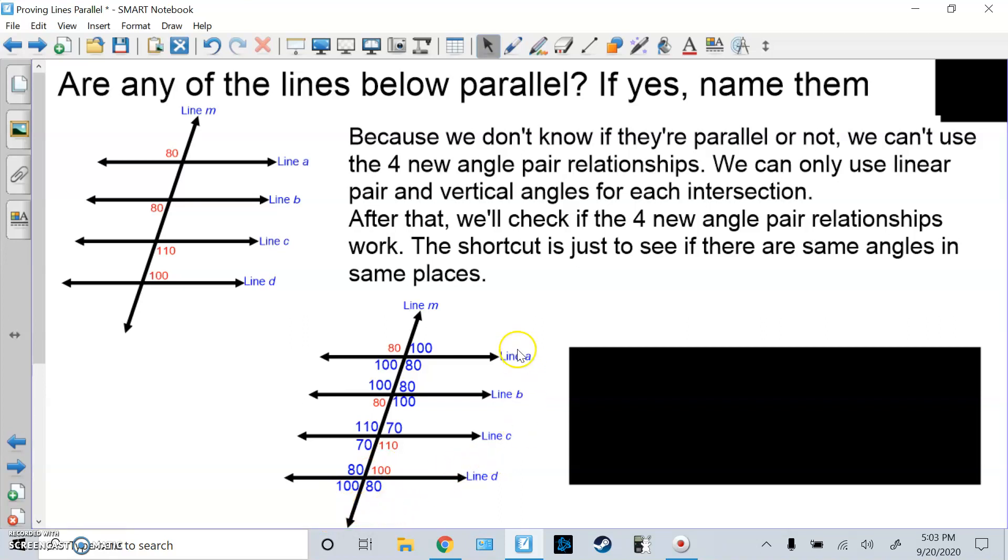Now I'm checking, is line A the same as line B? They both have 80s and 100s, but this top left angle is 80, this top left angle is 100. These corresponding angles are not matching. It's not drawn to scale either, so you must trust the numbers, the math. So A and B are not parallel.